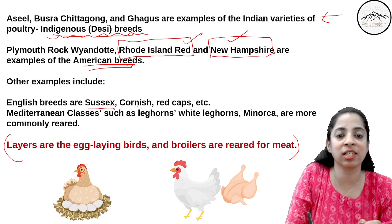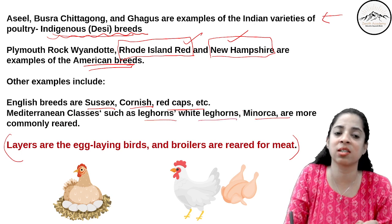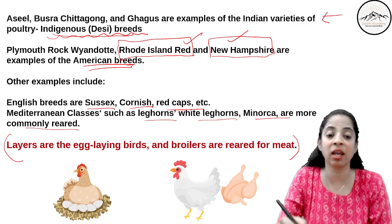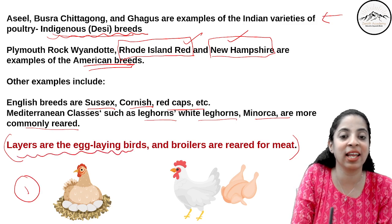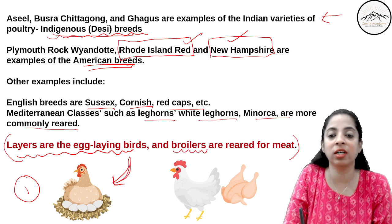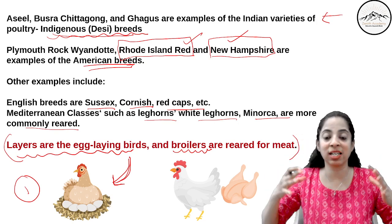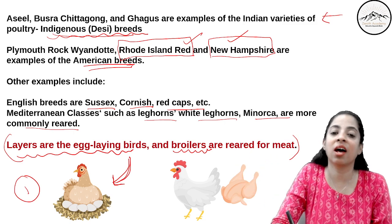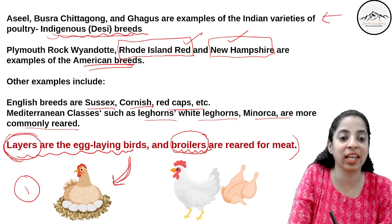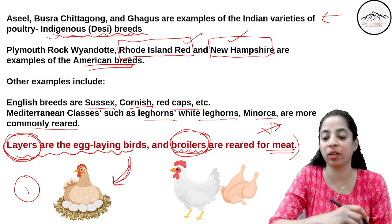English breeds include Suzags, Cornish, Redcaps, etc. Mediterranean classes include Leghorns, White Leghorns, and Menorca. Now very importantly: layers are the egg-laying birds — the variety which lay eggs. Broilers are fed more so their mass or muscles become heavier; they are reared for meat. These are two main categories: layers for eggs and broilers for meat. This is very important from an exam point of view.